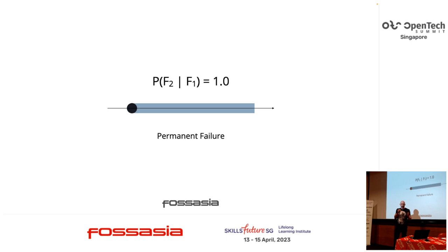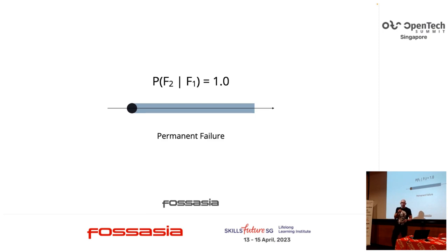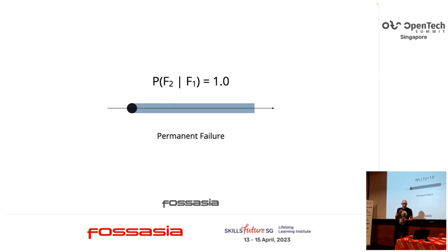If a failure is permanent, we can reasonably assume a second failure is certain — the probability is 100%. Permanent failures require manual intervention and manual repair. For example, if the cause of the failure is an expired certificate, then the 'could not connect' exception is a permanent failure: it doesn't auto-repair, and somebody has to come and install a new certificate.